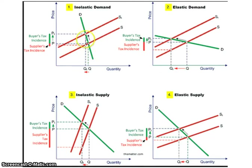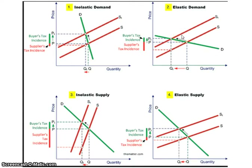The deadweight loss isn't that big compared to when you have an elastic demand, where the consumer is very responsive to a change in price. Maybe there are a lot of substitutes, or they've had a lot of time and can find something else. When you shift that supply curve to the left, the price goes up but not that much, while the quantity really goes down. As a result, you have a larger deadweight loss, and the burden of the tax is shifted more onto the producer than onto the consumer.